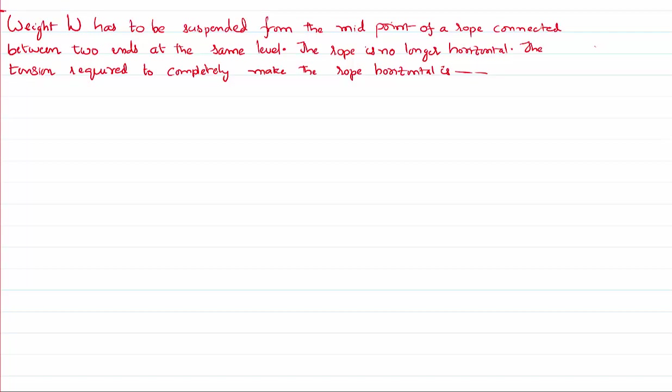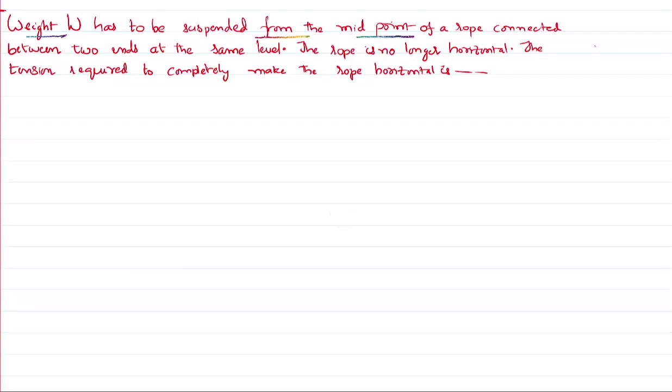The problem, let me first have a look at it. The problem is described this way: It is given that there is a weight which has to be suspended from the midpoint of a rope. I have to suspend the weight which is at the midpoint of a rope connected between two ends which are at the same level.